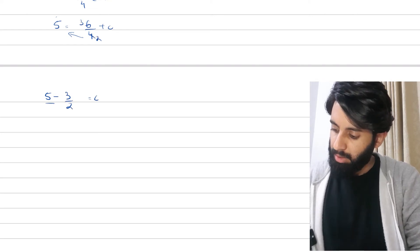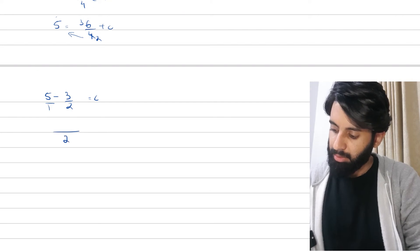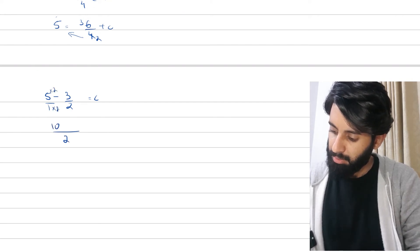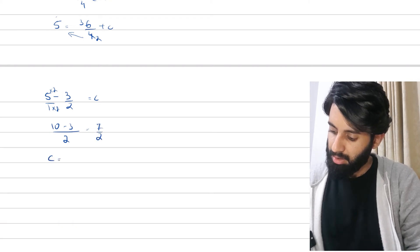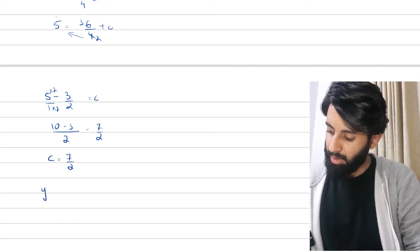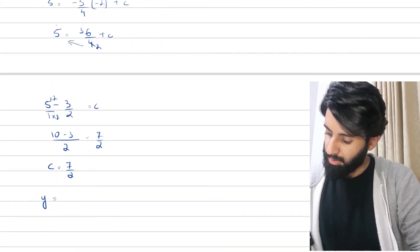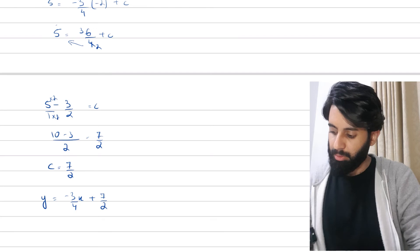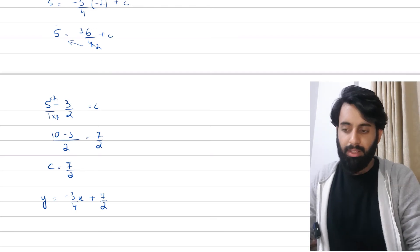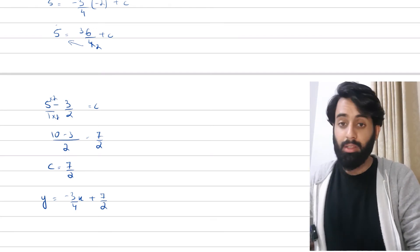Do not be tempted to cross-multiply right now — you need to take out the LCM first. So we do 5 − 6/4, which simplifies to 10/2 − 3/2 = 7/2. So c = 7/2. Replacing it in the equation: y = −3/4 x + 7/2. You can leave it like this or take out the LCM and cross-multiply — it's up to you.